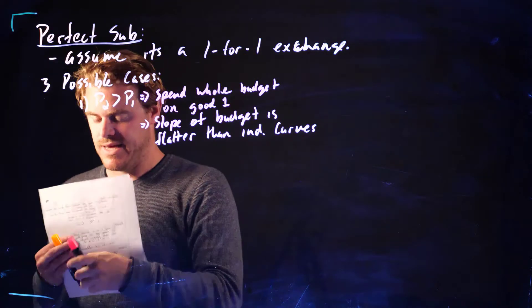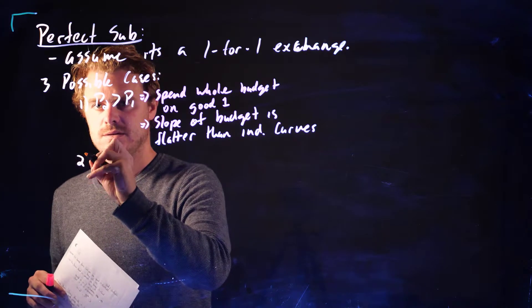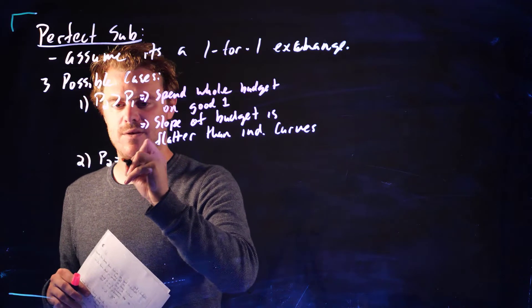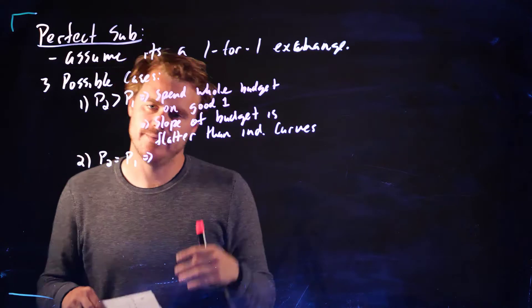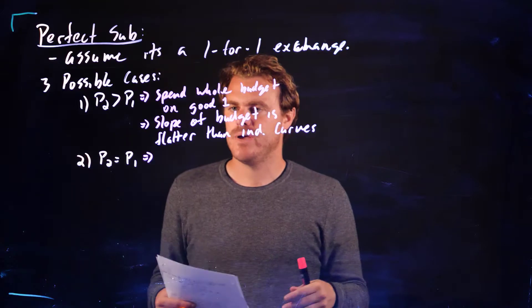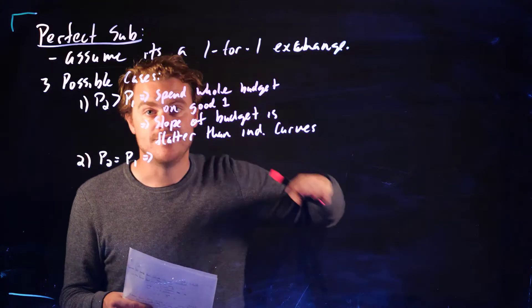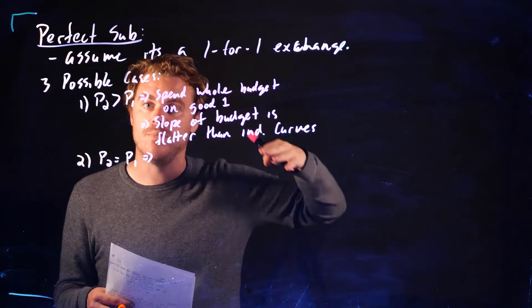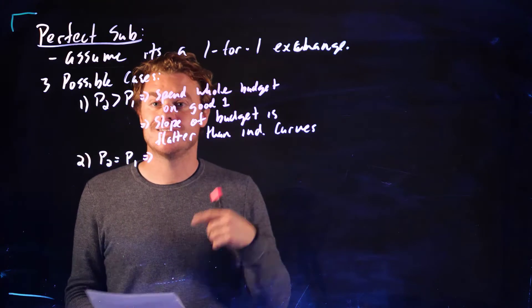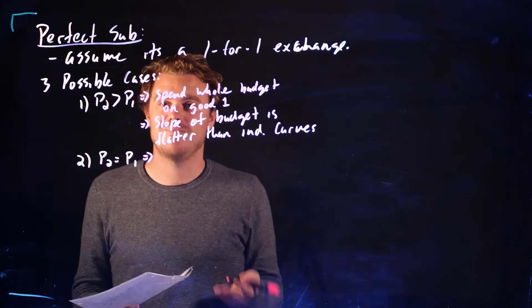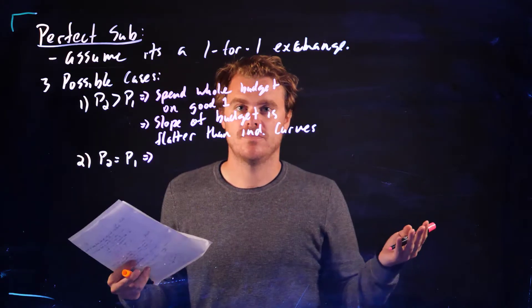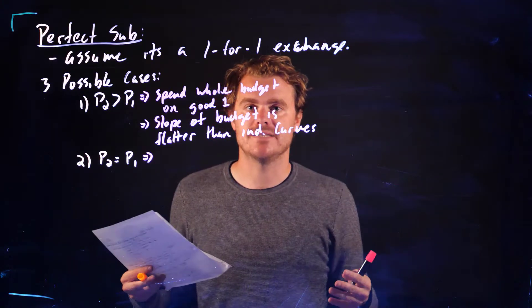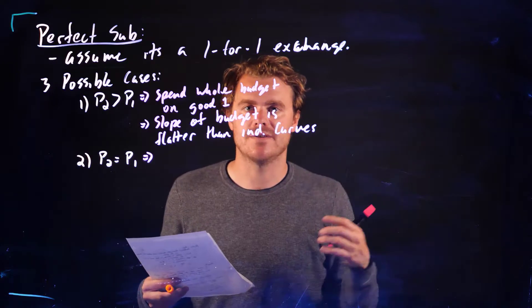So we'd have a flatter slope, which means we're going to get a corner solution and we're only going to buy commodity 1. The second case would be if the prices were equal. Well, we could have like a continuum of different optimal bundles for this consumer.